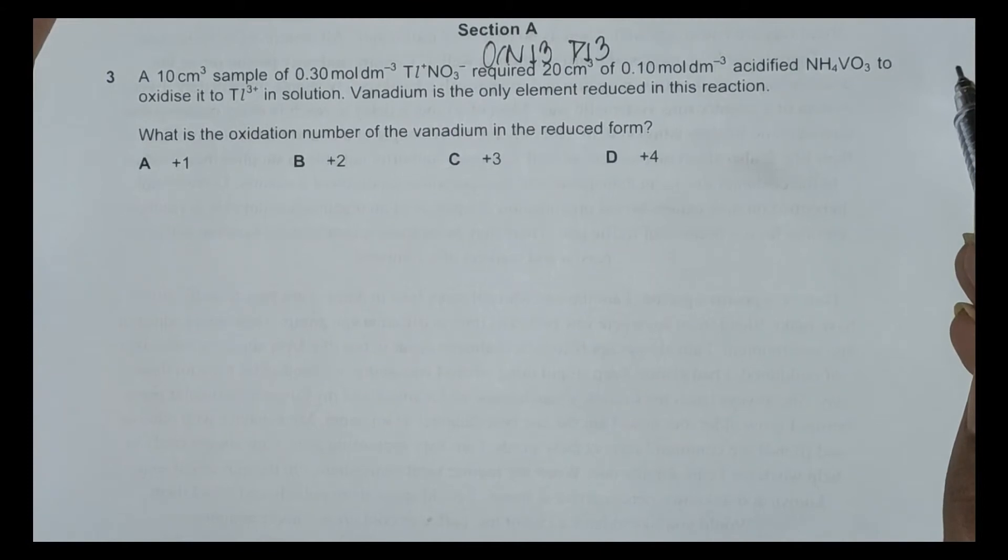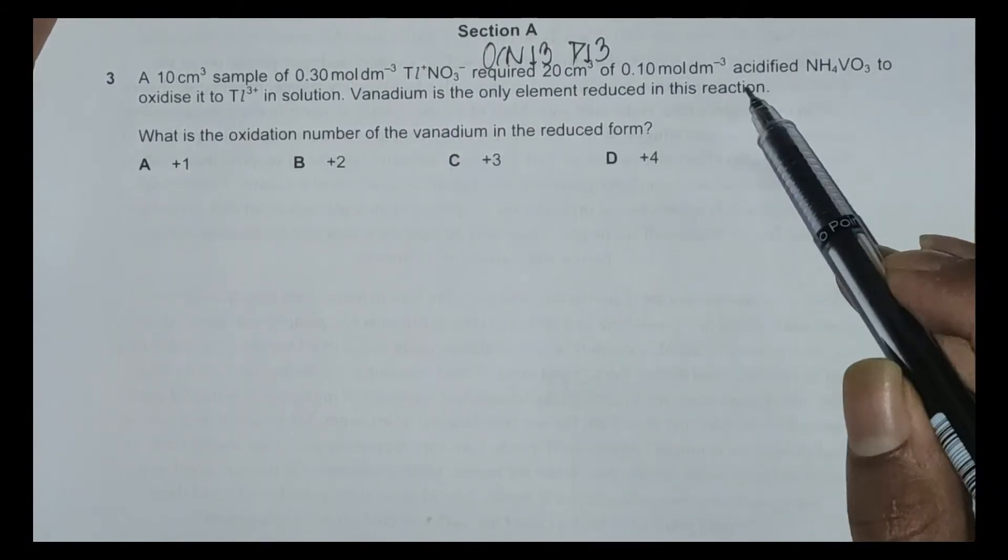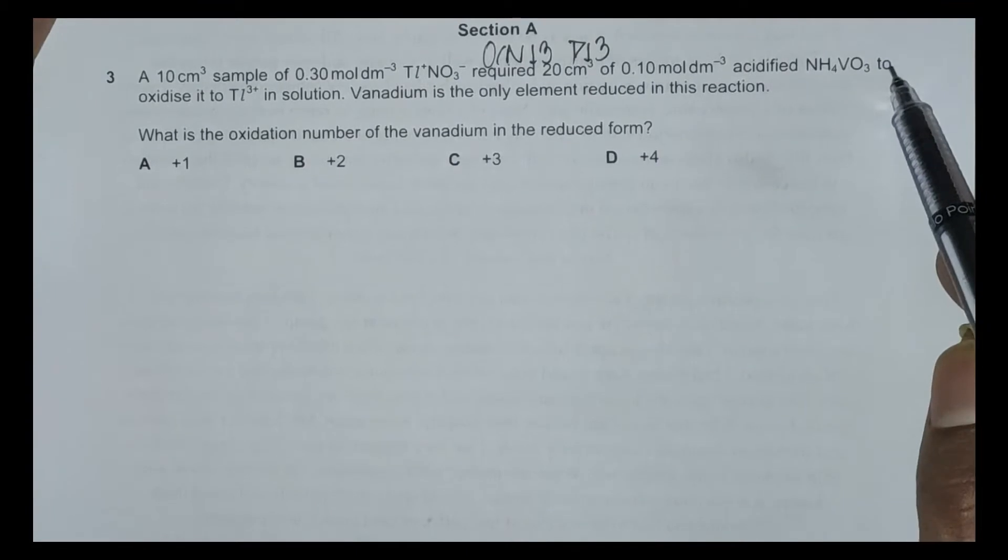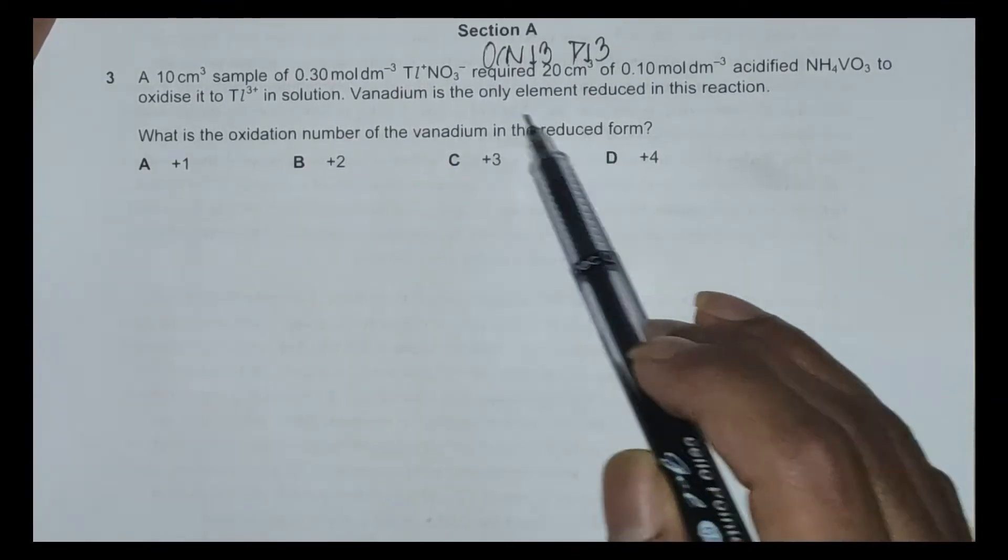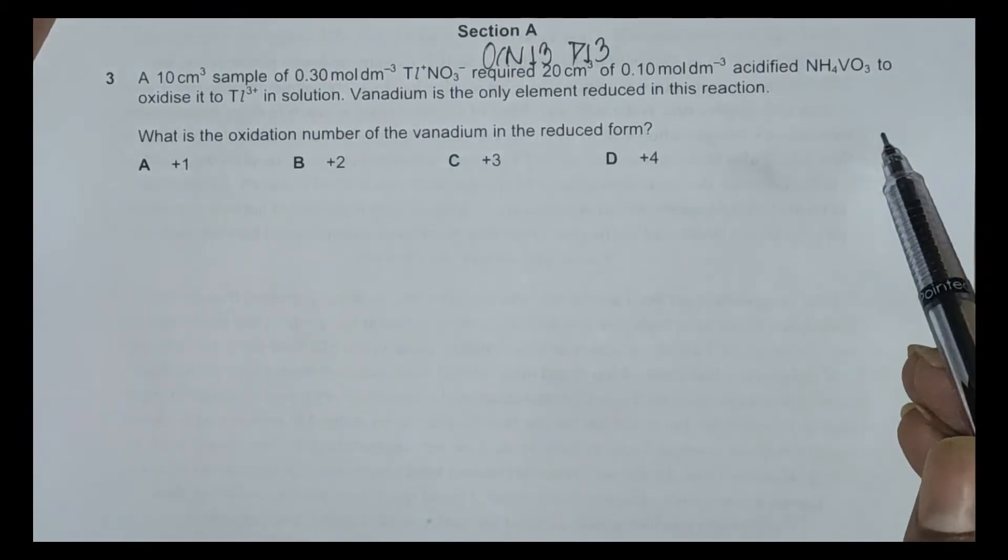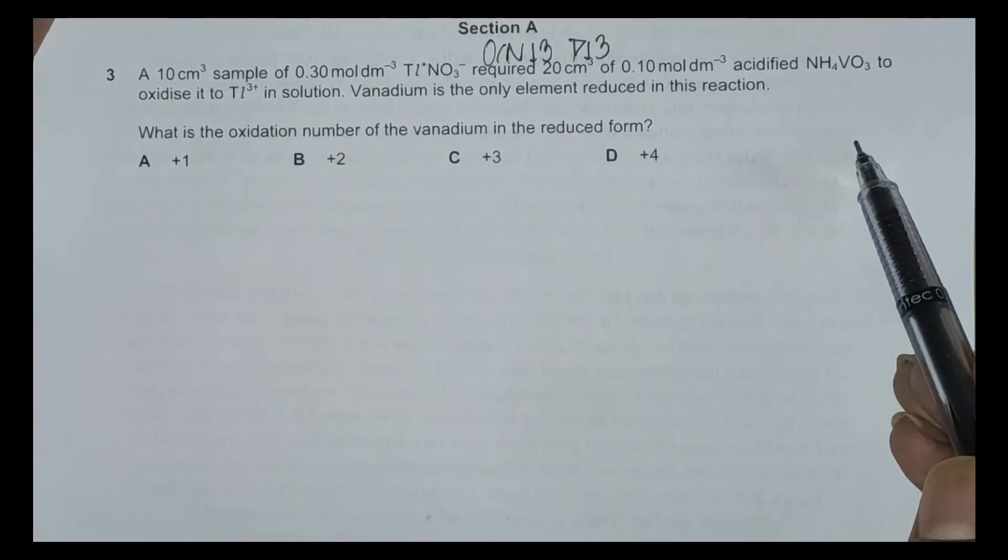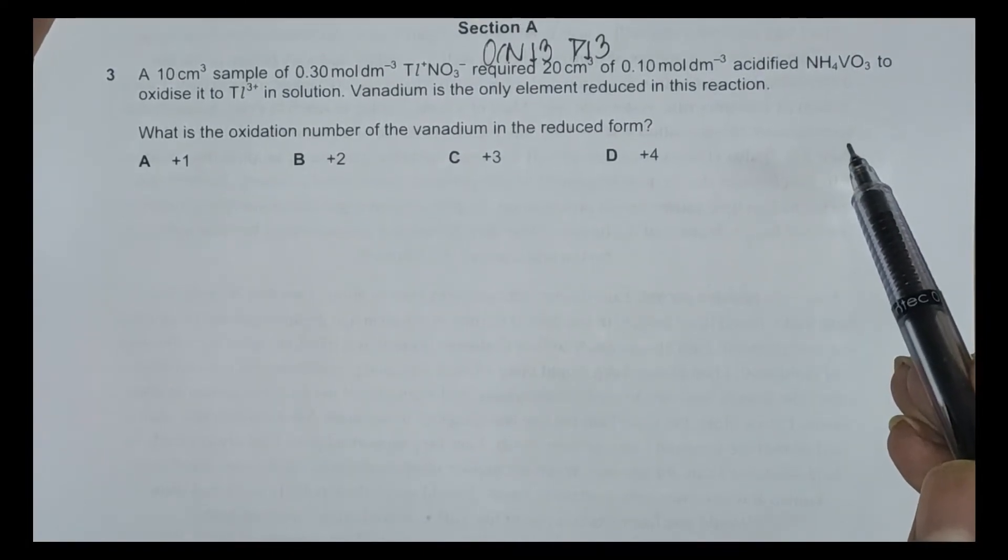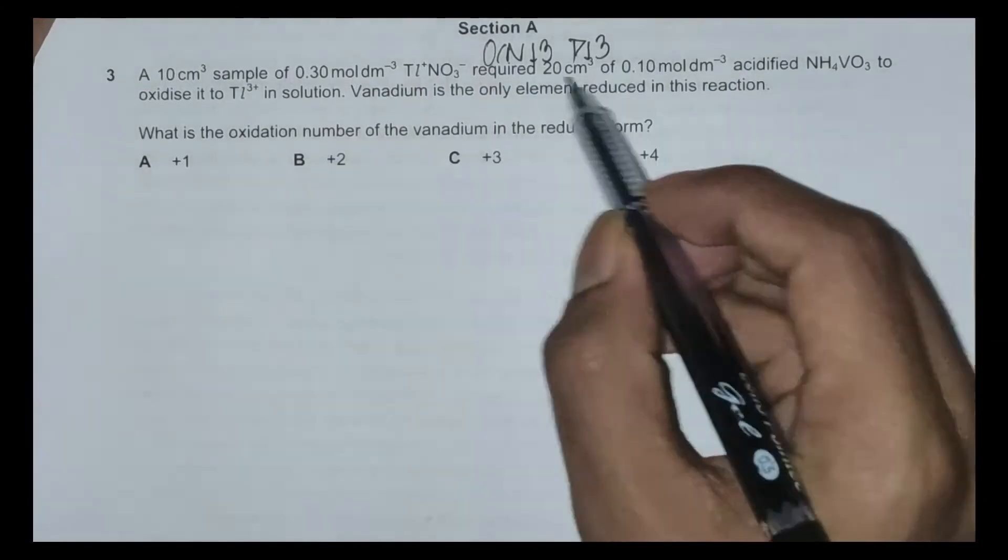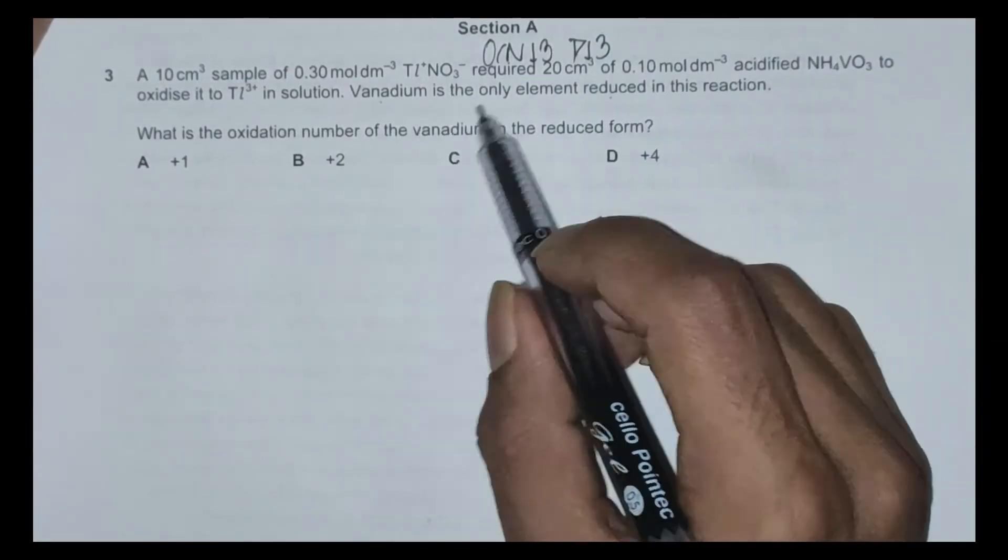required 20 cm³ of 0.1 mol per dm³ acidified NH₄VO₃ to oxidize it to TL³⁺. In solution, vanadium is the only element reduced. Vanadium is reduced and TL⁺ is oxidized to TL³⁺.